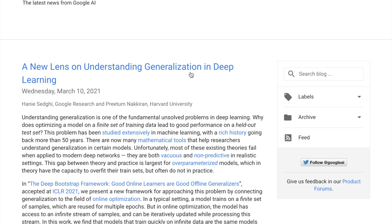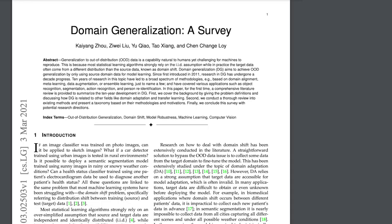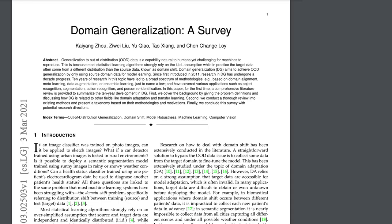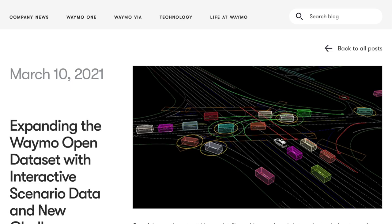Then we'll look at a new lens on understanding generalization in deep learning with a new technique for data splitting. We also have a survey paper on domain generalization, and then CheckScene — unseen disease detection for deep learning interpretation of chest X-rays. How well can we generalize to new diseases? It's kind of like a few-shot learning problem but with diseases, which is an interesting way of looking at this problem.